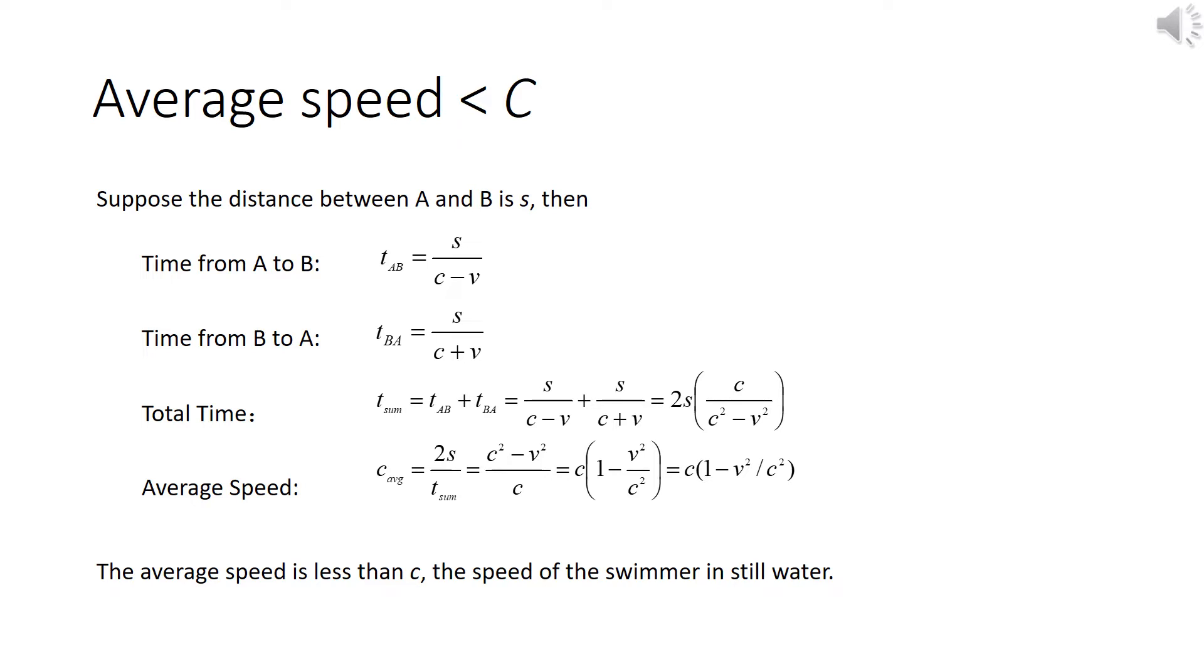The average speed is the total distance divided by the total time. It would be 2S divided by 2SC divided by C squared minus V squared, which would give C times 1 minus V squared divided by C squared. So the average speed is less than the swimmer's speed in still water.